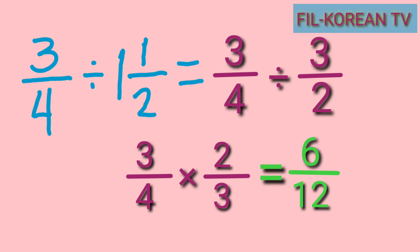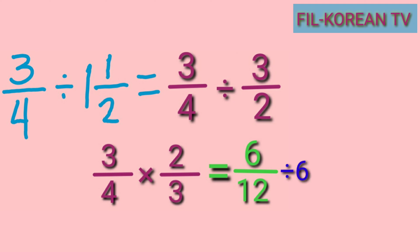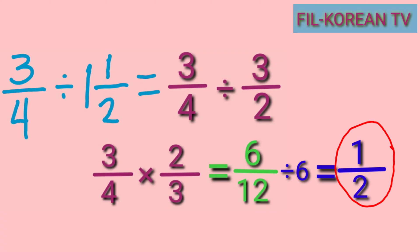The answer is 6 twelfths. It is a proper fraction but can be reduced to lowest terms because 6 and 12 have common factors. We divide them by their GCF. The GCF of 6 and 12 is 6. So 6 divided by 6 equals 1, and 12 divided by 6 equals 2. The final answer is one half.